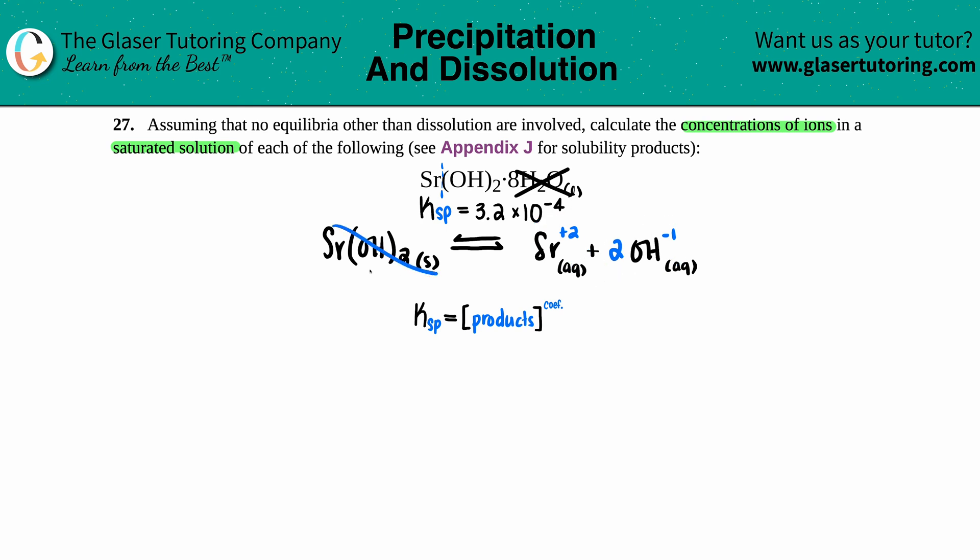Next, I'm going to take my general Ksp formula and just make our own for what we have. The two products is the strontium and the hydroxide. Remember, reactants aren't included because no solids are allowed. So Ksp equals the concentration of the strontium ion Sr²⁺ times the hydroxide ion OH⁻, raised to the coefficients.